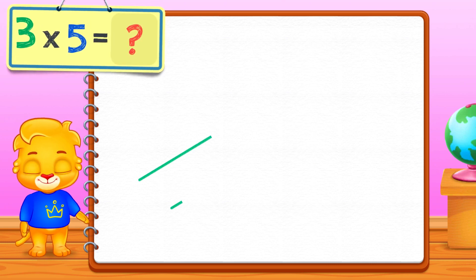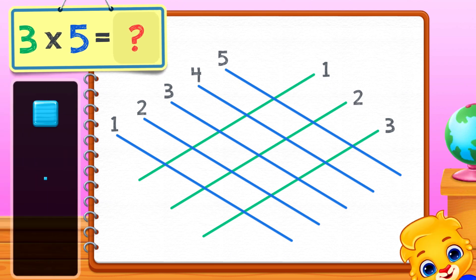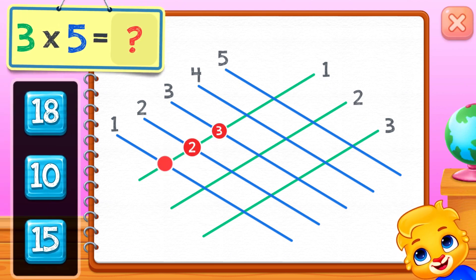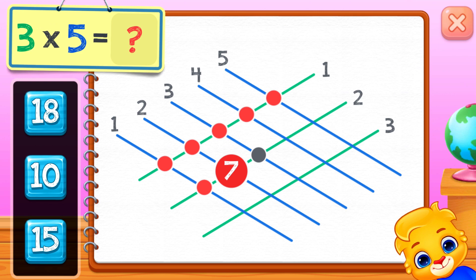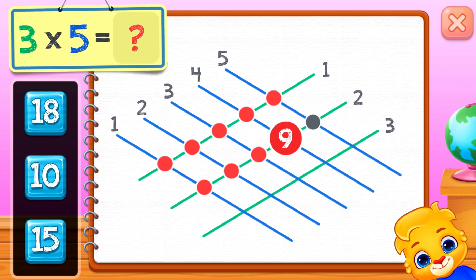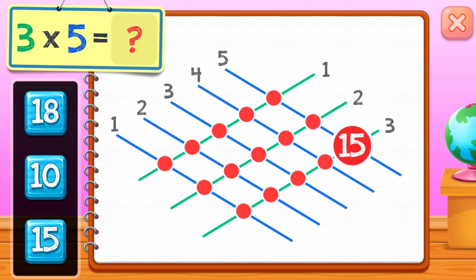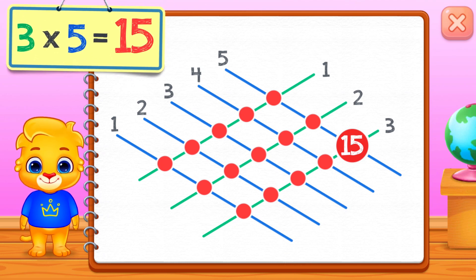Three times five equals — one, two, three, four, five, six, seven, eight, nine, ten, eleven, twelve, thirteen, fourteen, fifteen. Three times five equals fifteen.